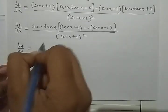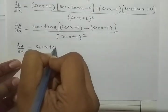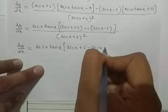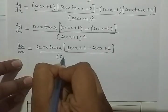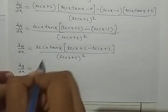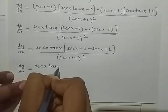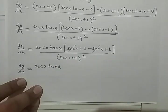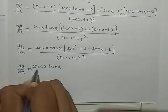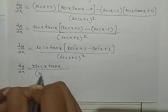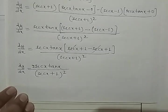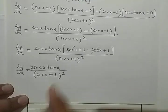Therefore, dy by dx is equal to sec x tan x times [(sec x + 1) minus (sec x - 1)] upon (sec x + 1) whole square. The sec x terms cancel, giving 2 sec x tan x upon (sec x + 1) whole square. This is our answer.